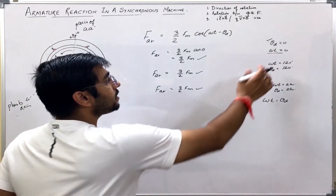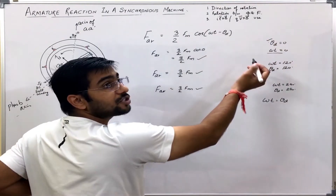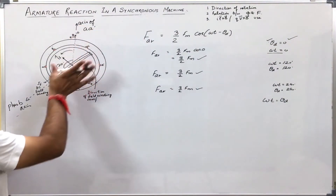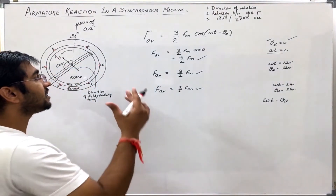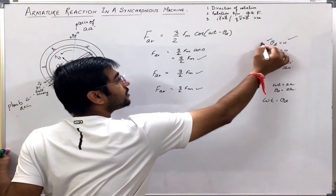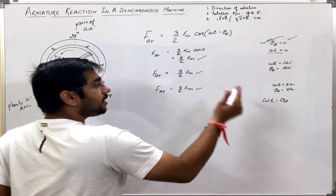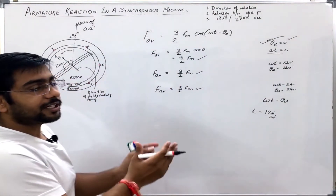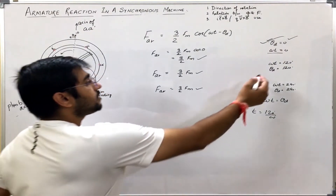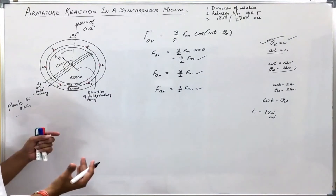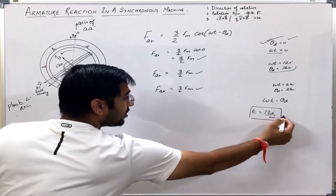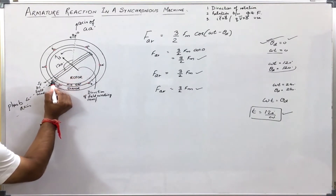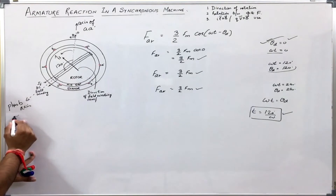So at t = 0, the maximum value was at θ_d = 0. Where is θ_d = 0? Here, along this line — that is the axis of phase a. So at t = 0, the maximum value of armature reaction MMF was along the axis of phase a. Now at time t = 120°/ω, that is ωt = 120°, what is the position where we are getting the maximum armature reaction MMF? It is θ_d = 120°.